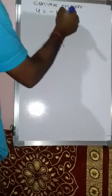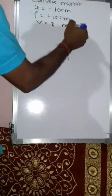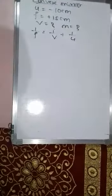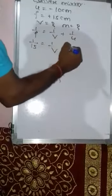Now if we take a convex mirror with the same values — u equals minus 10 cm — what changes? For convex mirror, f is plus 15 because the focal length is on the right side, so f is positive. The mirror formula is the same: 1/f = 1/v + 1/u. But here f is positive, so 1 by 15 equals 1/v plus 1 by minus 10.